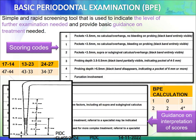We'll go on first with the basic periodontal examination. Any patient who steps into your clinic — if you want to assess their periodontal health — you need to perform the Basic Periodontal Examination, called the BPE. This is a simple and rapid screening tool used to indicate the level of further examination needed and provides basic guidance on the treatment needed. Here you can see a picture with a probe — this is the WHO probe, which will be given to you when you come to the clinics. There is a ball of around 0.5 mm at the bottom.